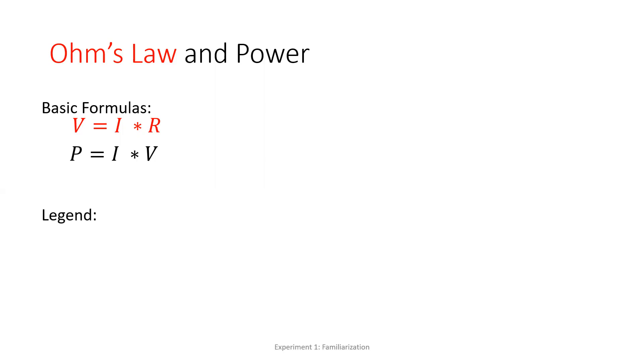So for the legend, we have voltage V, current I, resistance for R, and power for P.